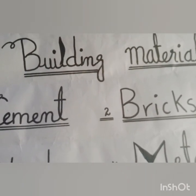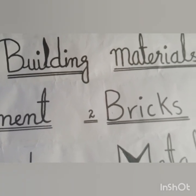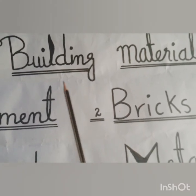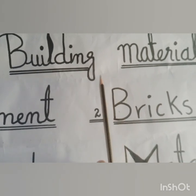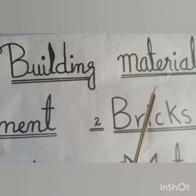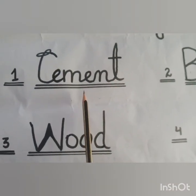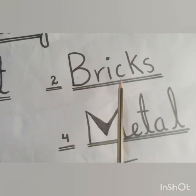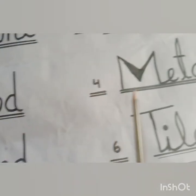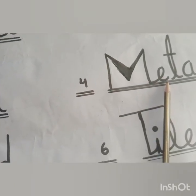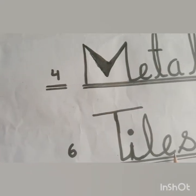Now we will discuss the different kinds of houses and about the building materials. The building materials are: number one is cement, number two is bricks, number three is wood, number four is metal or steel, number five is sand, and number six is tiles.